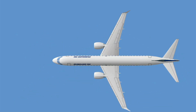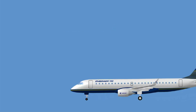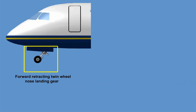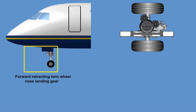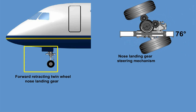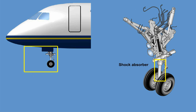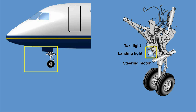Besides the conventional flight controls, the aircraft is equipped with an adjustable stabilizer and multifunctional spoilers. Aerodynamic characteristics are enhanced by leading-edge slats and ground spoilers. The aircraft has a forward-retracting twin-wheel nose landing gear. The nose landing gear has a normal steering angle of up to 76 degrees either way. The shock absorbers are of oleo-pneumatic type, and the steering motor, taxi light, and one landing light are mounted on the nose landing gear.